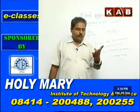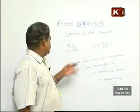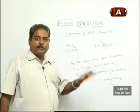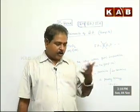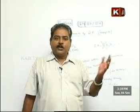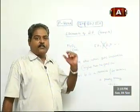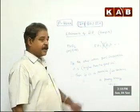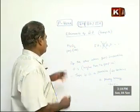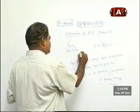Lead belongs to group 4A — carbon, silicon, germanium, stannum, lead. So lead belongs to group 4A, and plus 4 is not impossible for lead. Lead is not unhappy taking plus 4. Though it prefers plus 2 due to the inert pair effect, lead will not say no to plus 4. So plus 4 is okay for lead, and therefore PbO2 is not a peroxide — it is an oxide.